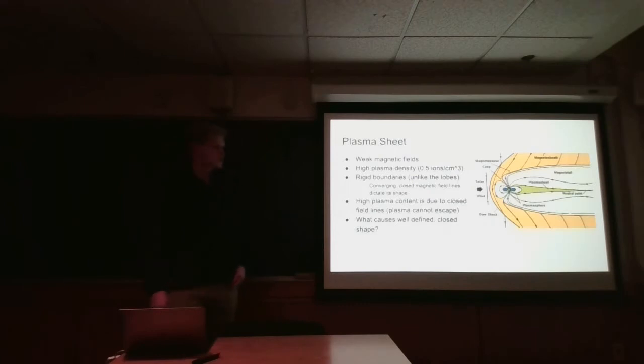Now the plasma sheet is the region that separates the two lobes. And it's characterized by weak magnetic fields, whereas the lobes have high magnetic fields. And because of its closed nature, it has high plasma density as the ions are generally not able to escape.